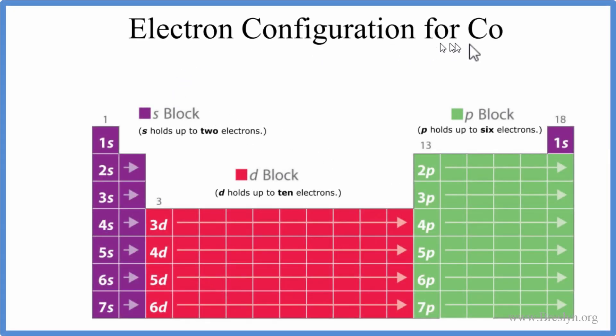To write the electron configuration for CO, that's cobalt, we'll go to the periodic table and look up cobalt.